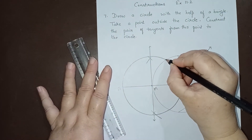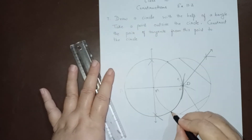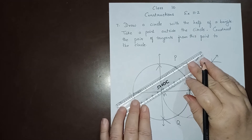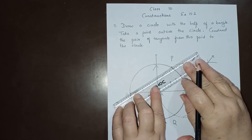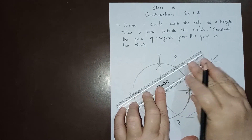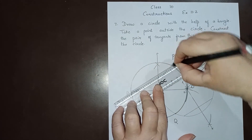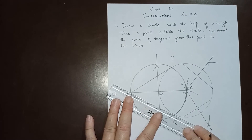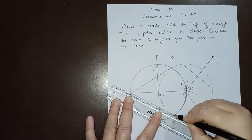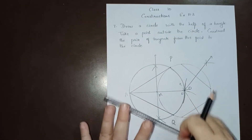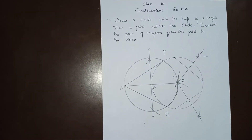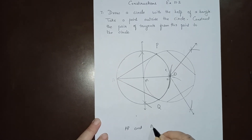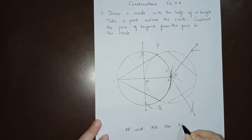This circle intersects our original circle at two points — let the two points be P and Q. Join AP and AQ. These are the required tangents to the circle. AP and AQ are the required tangents.